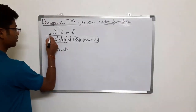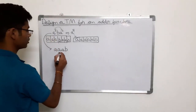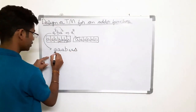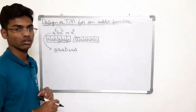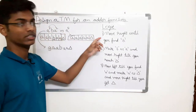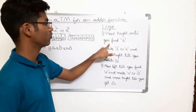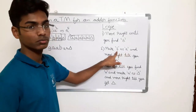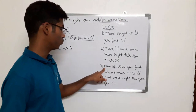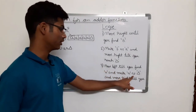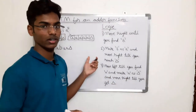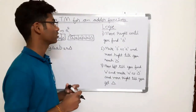Let's rewrite this as 3 a's, b, 2 a's, and delta. Initially we start here. Now let me write the logic. The steps are: first, move right until you find small b, then make b as a and move right till you reach delta. Third, move left till you find a and make a as delta. Then move right till you get delta.